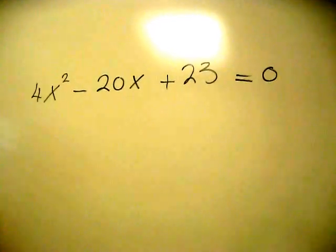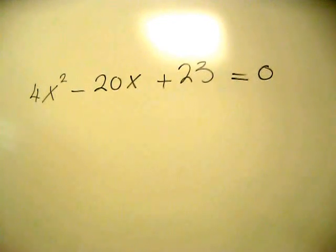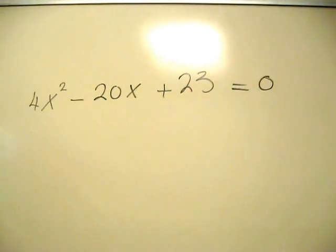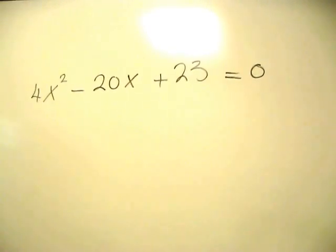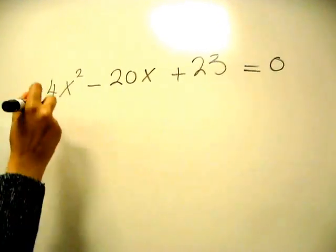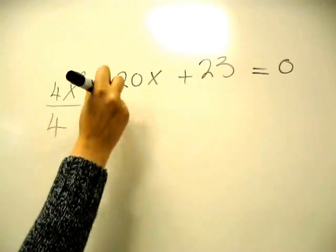Now we're going to complete the square by the normal regular way that we know. I'm going to complete the square by making sure that the x squared coefficient is 1. In this case I'll divide everything by 4.